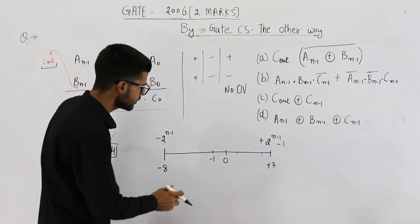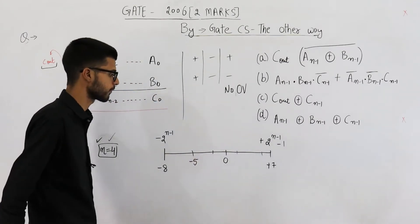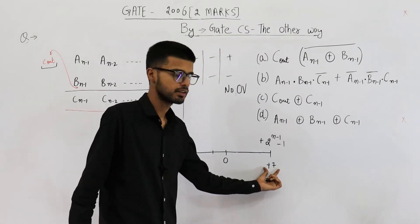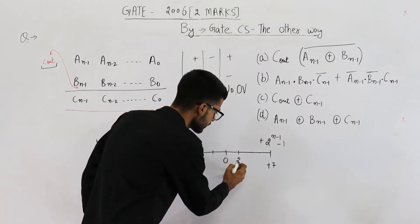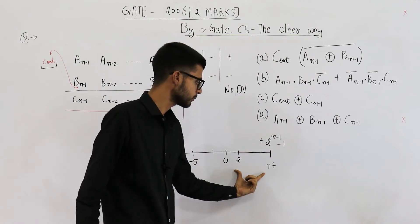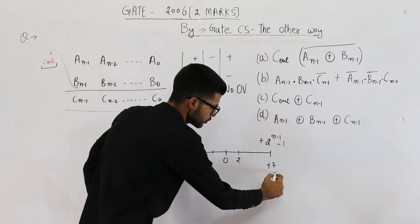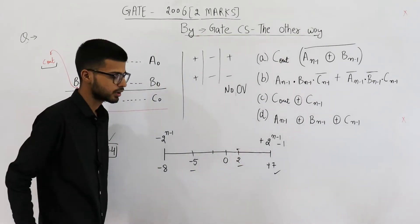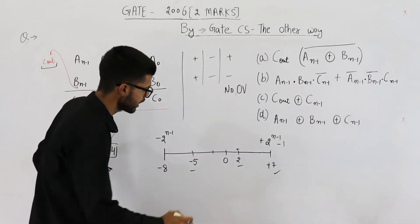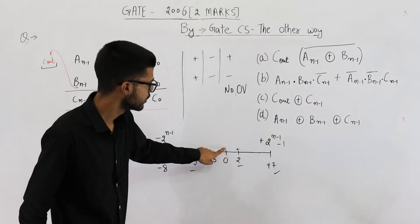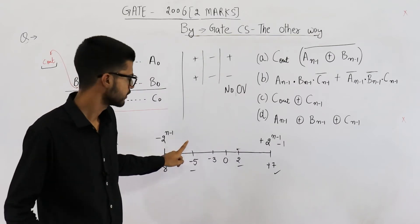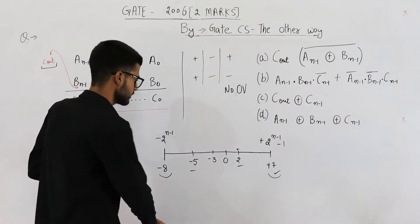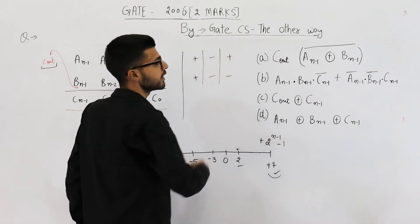Let us see one more example. Say from the negative side I pick minus 5. Whatever you choose from the positive side, the result will always remain in range. Say I choose plus 7 — 7 minus 5 is 2, still in range. If you choose 2, from 2 you are trying to move 5 steps back, that means you reach minus 3. In the worst case, if you choose 0, you still move 5 steps back — that is minus 5. You cannot go beyond minus 8 or beyond plus 7. So a positive and a negative number can never cause overflow.